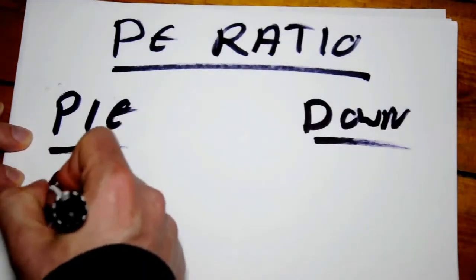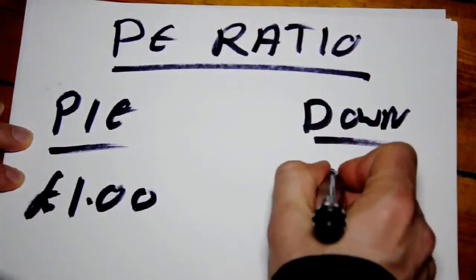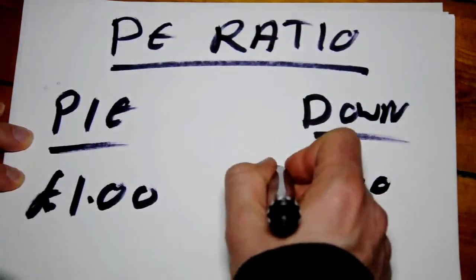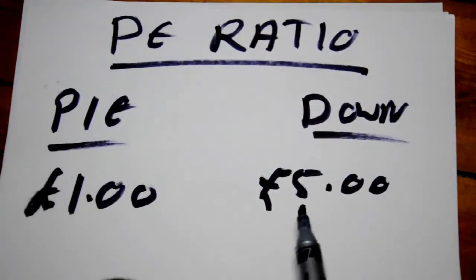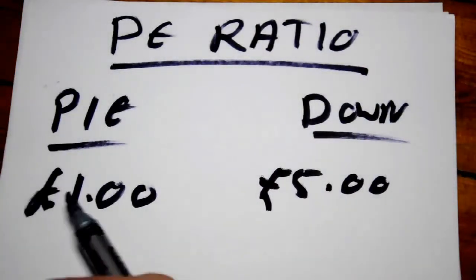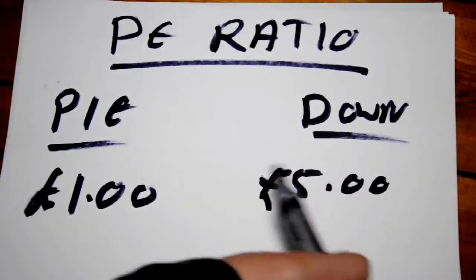Pie in the Sky is trading at a pound. Down to Earth is trading at five pounds. Now, on the face of it, Down to Earth is more expensive than Pie in the Sky. It's got a higher share price. It's higher by four pounds.